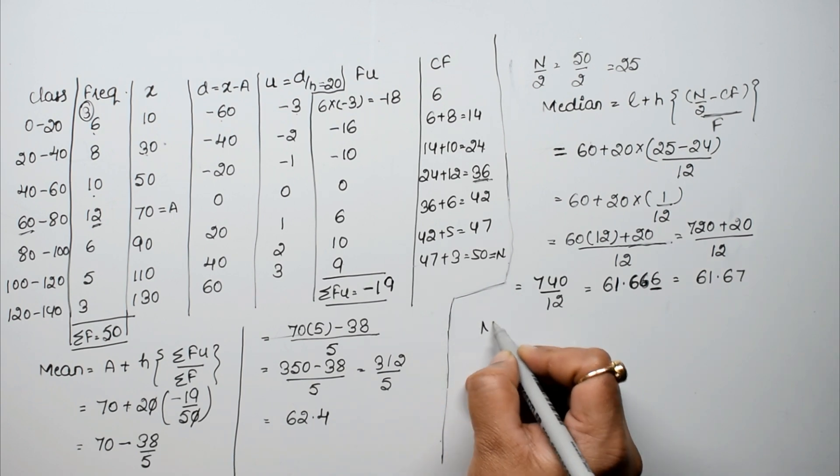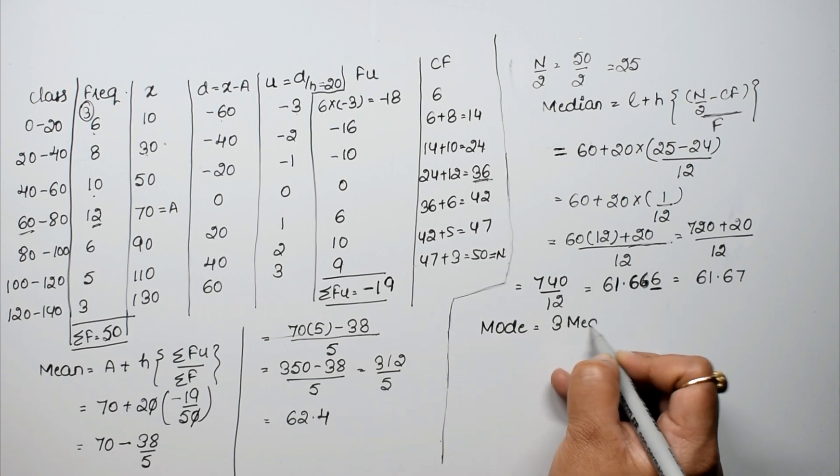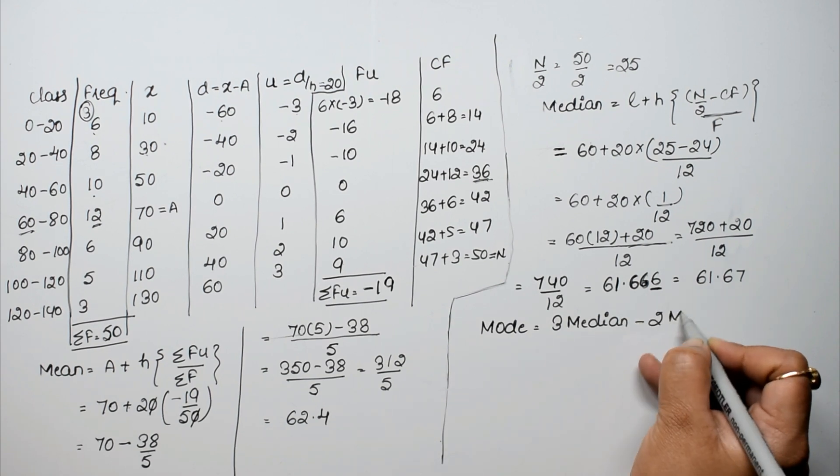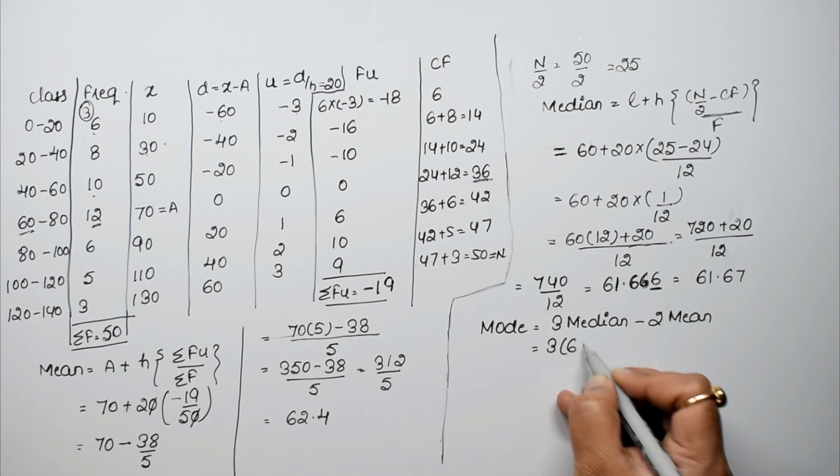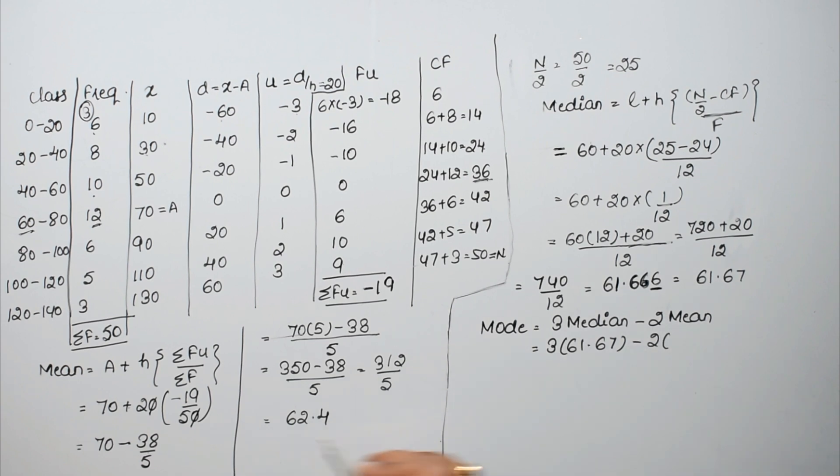Toh hume mode nikalna hai. Mode is thrice of median minus twice of mean. Thrice of median, 3 into 61.67, and mean, 2 into 62.4. 3 sevens are 21, 2 carry, 18, 19, 20, 2 carry. 3 ones are 3, 4, 5, and 6. 3 into 6 is 18. Minus, 2 fours are 8, 2 twos are 4, here a point will be, 2 sixes are 12. So how much is this? 1 from 0 is 1, 10 from 8 is 2, 4 from 4 is 0, and 4 from 6 is, so 60.21 is the answer.